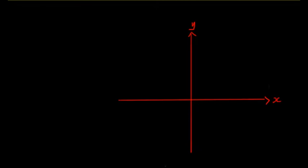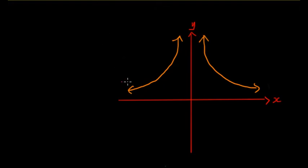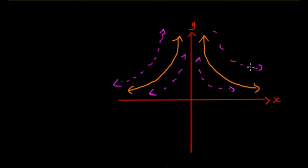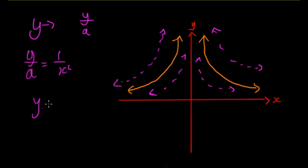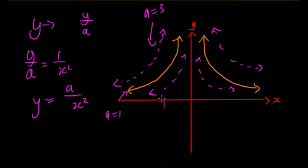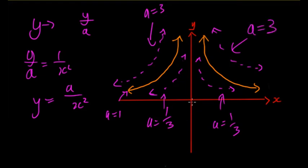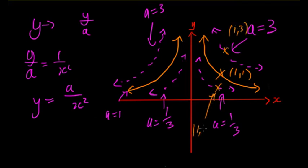What happens when we dilate this shape? If we dilate from the x-axis, we replace y with y/a, giving y/a = 1/x², so y = a/x². For example, if a = 3, the original point (1, 1) becomes (1, 3); if a = 1/3, that point becomes (1, 1/3). Both sides must be changed together since the shape is symmetrical.